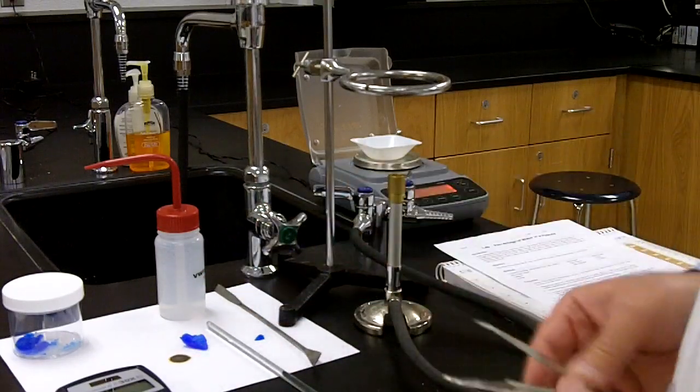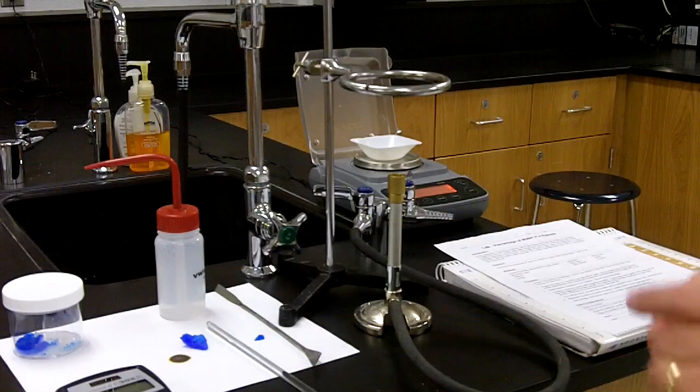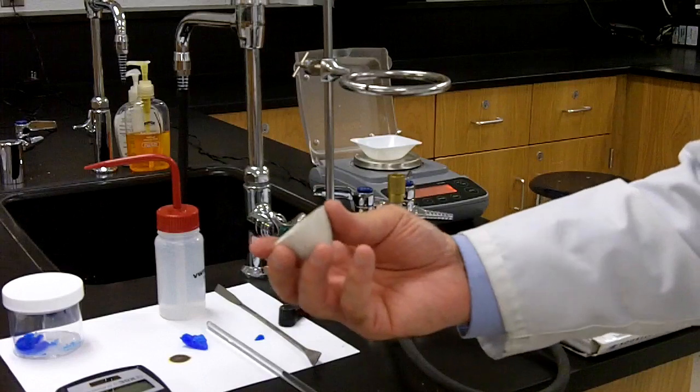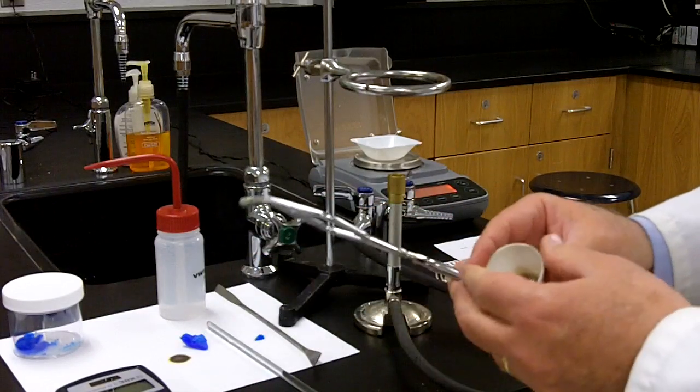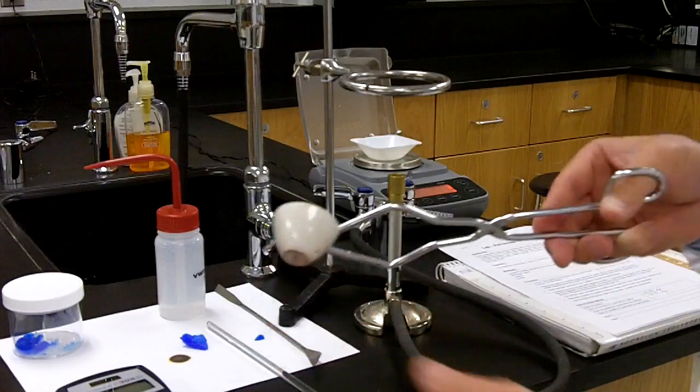The first thing we're going to do is we're going to get a mass of a crucible. And a crucible is just a small ceramic vessel, just like that. It is able to withstand a large amount of heat because we're going to be heating up the copper 2 sulfate pentahydrate.